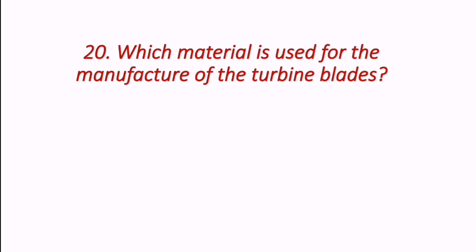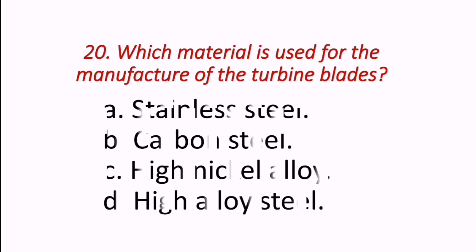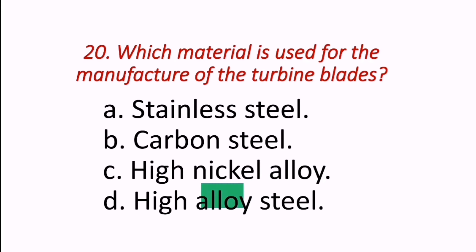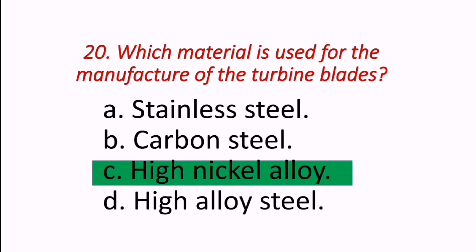Question: Which material is used for the manufacture of turbine blades? The answer is high nickel alloy. High nickel alloy is used to prepare the turbine blades.